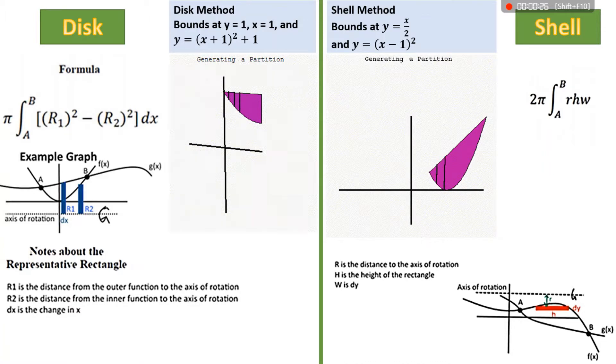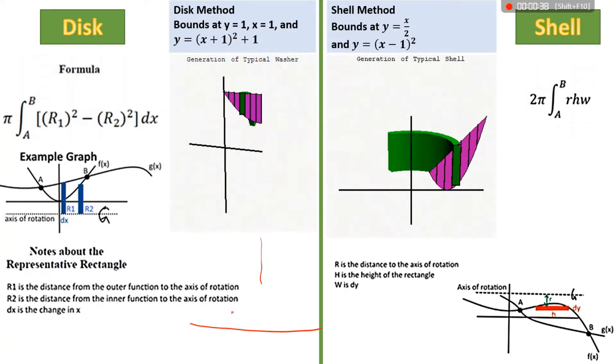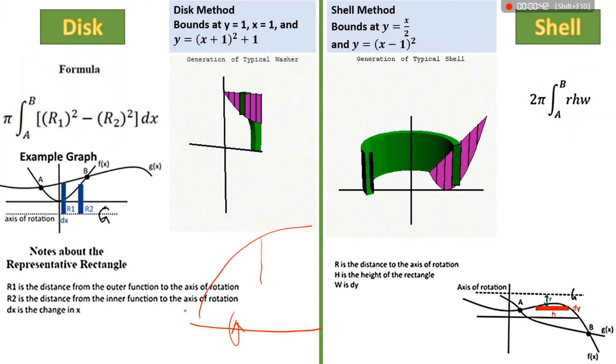So really quickly to review, with disk method, we typically use disk method revolving around the x-axis. That's a horizontal line. If we wanted to spin an area between two curves about some sort of horizontal line,